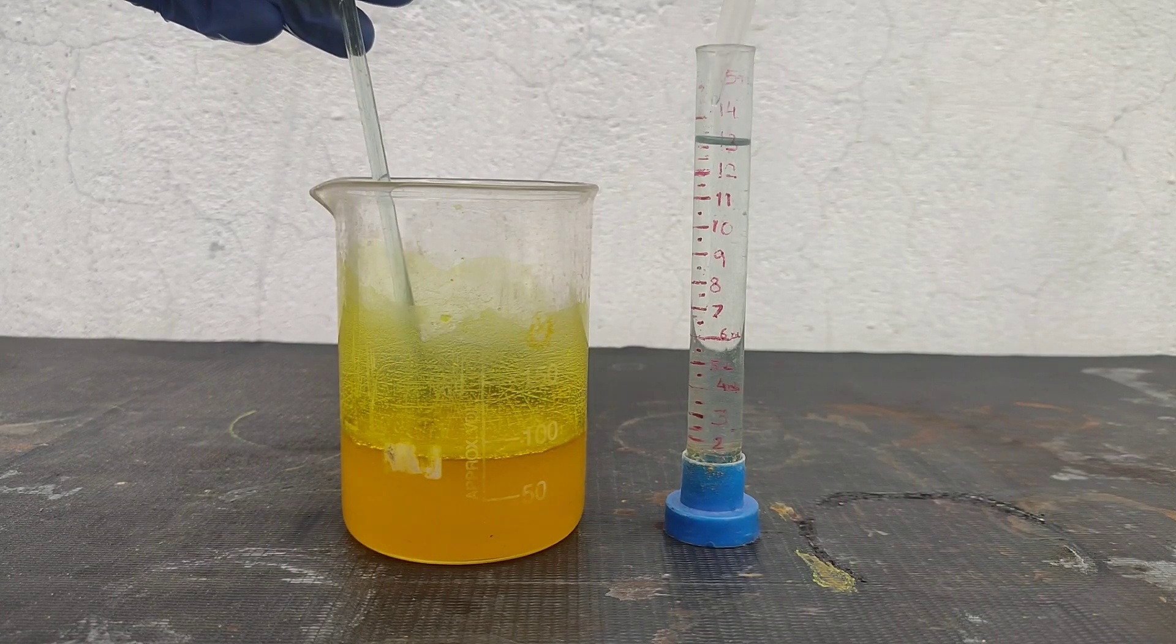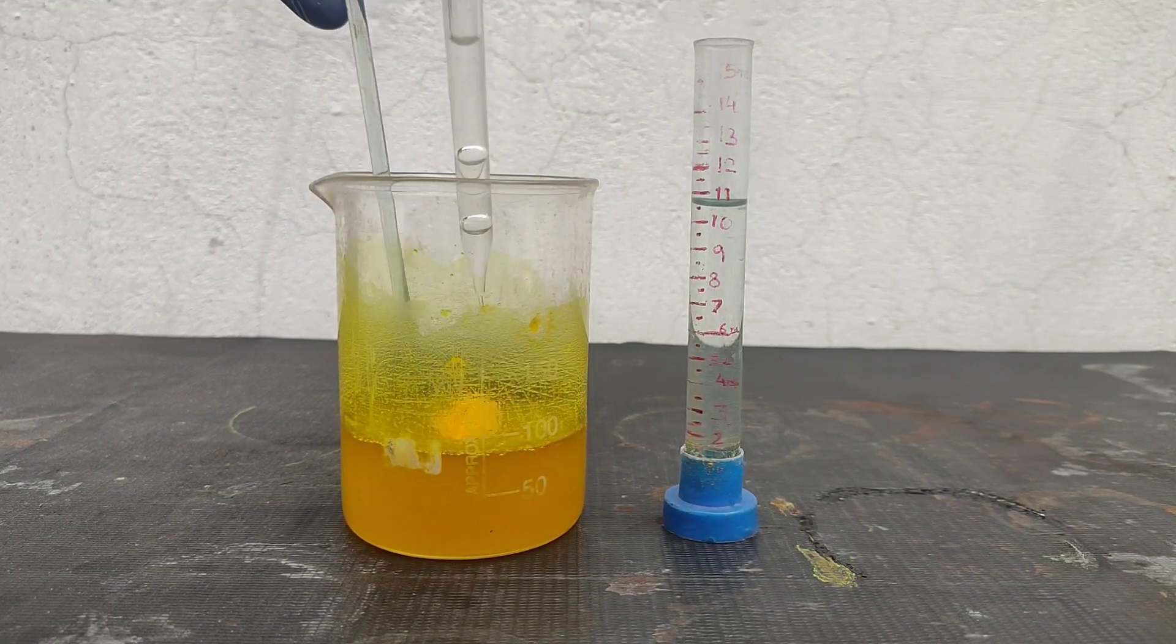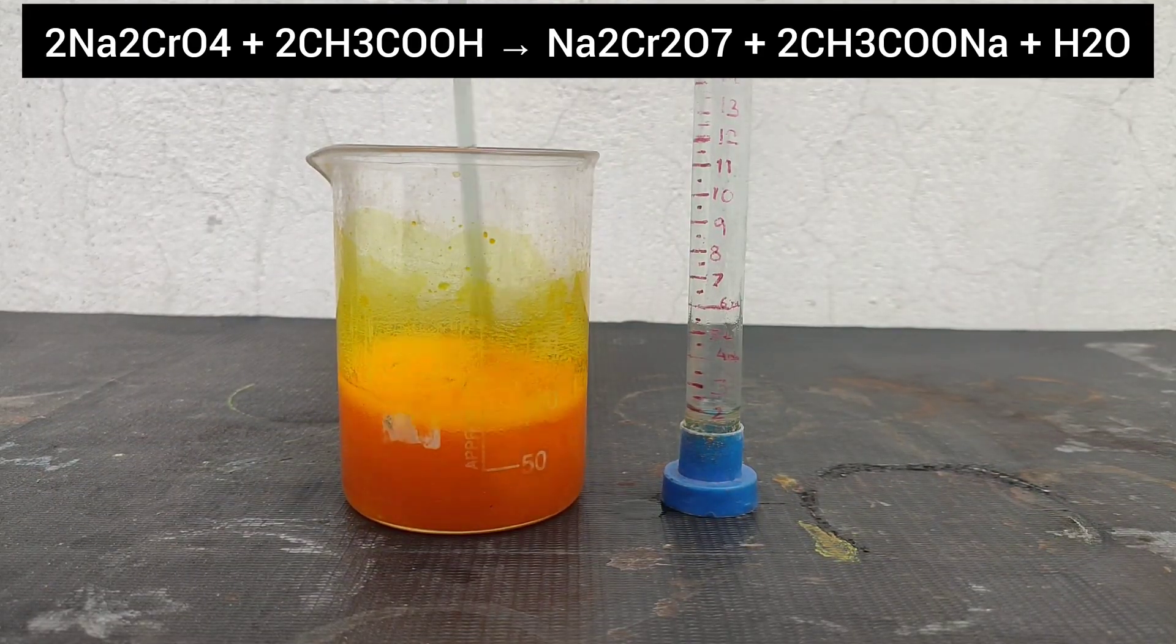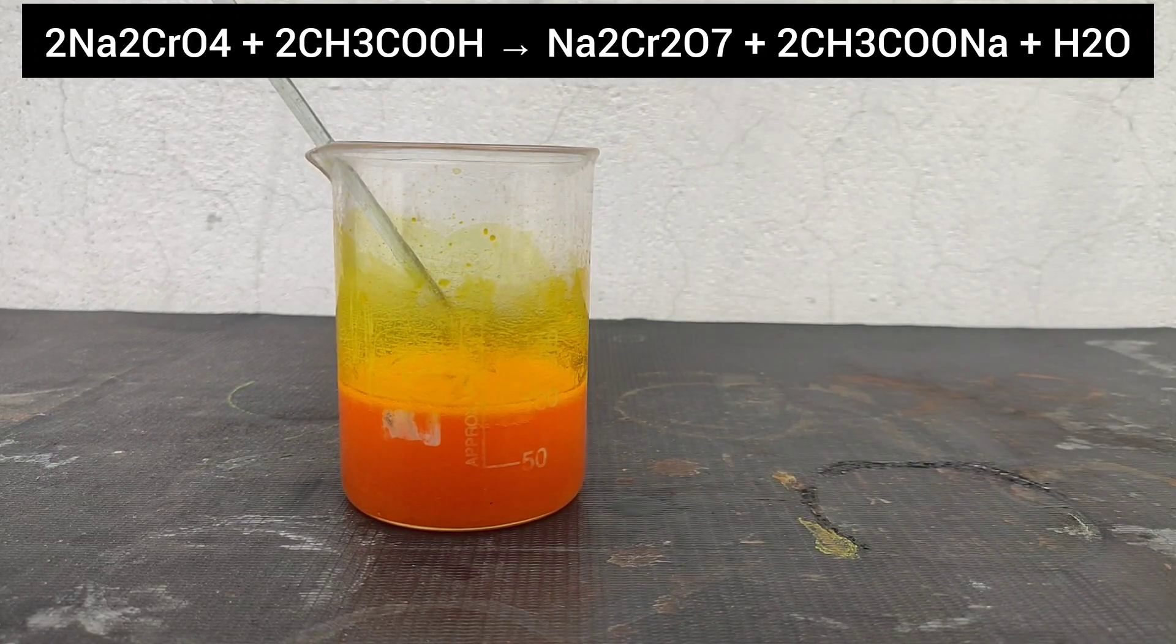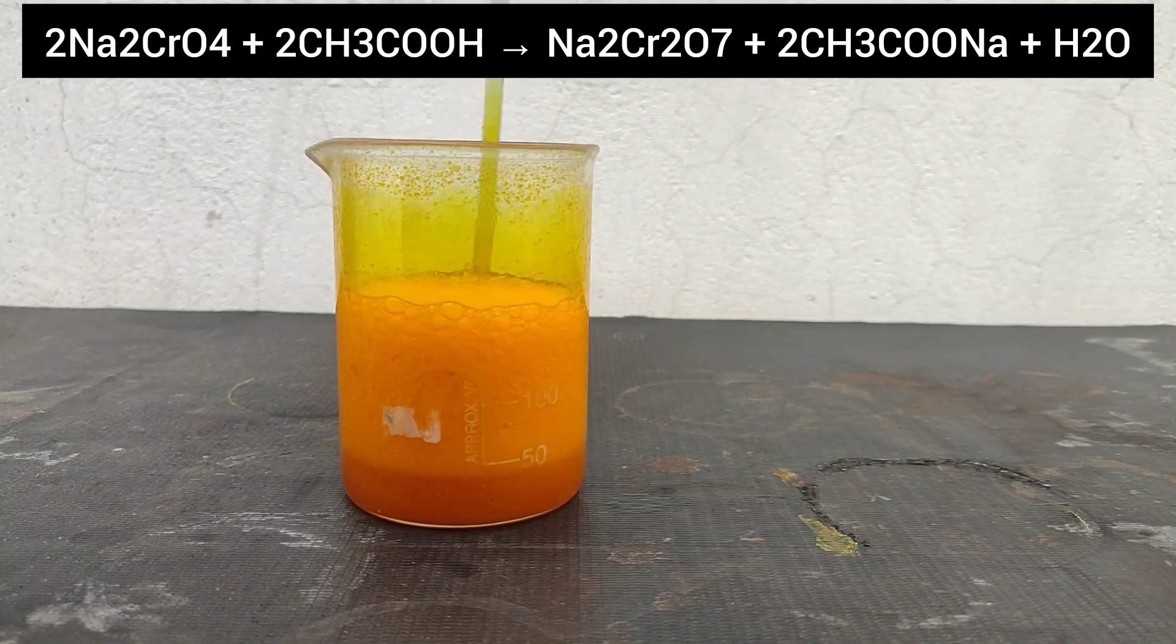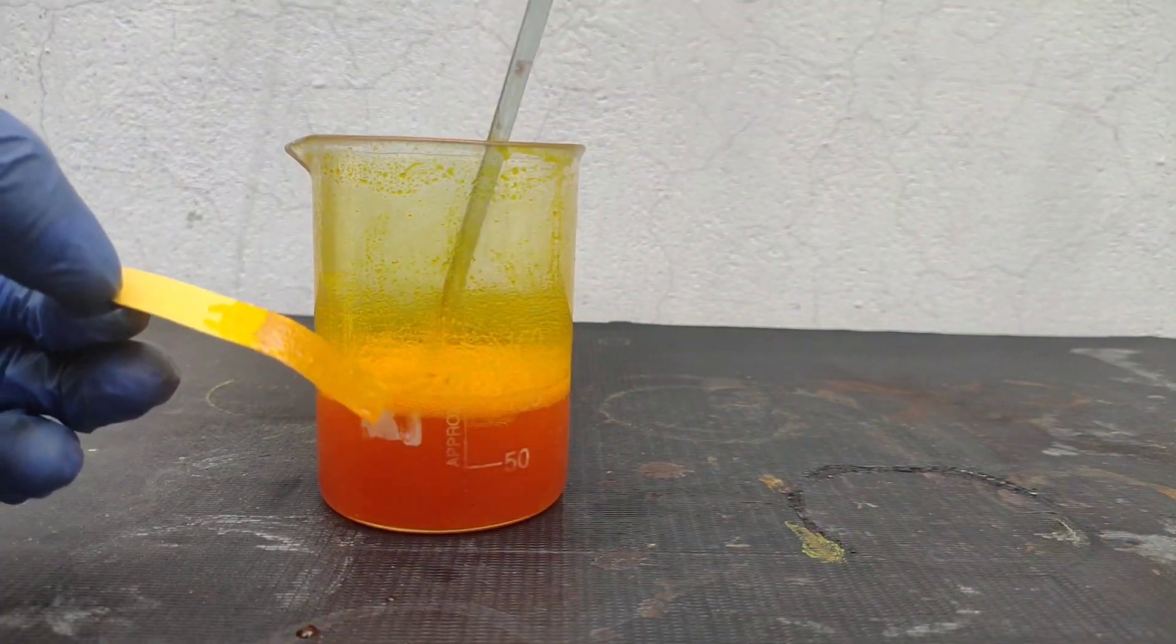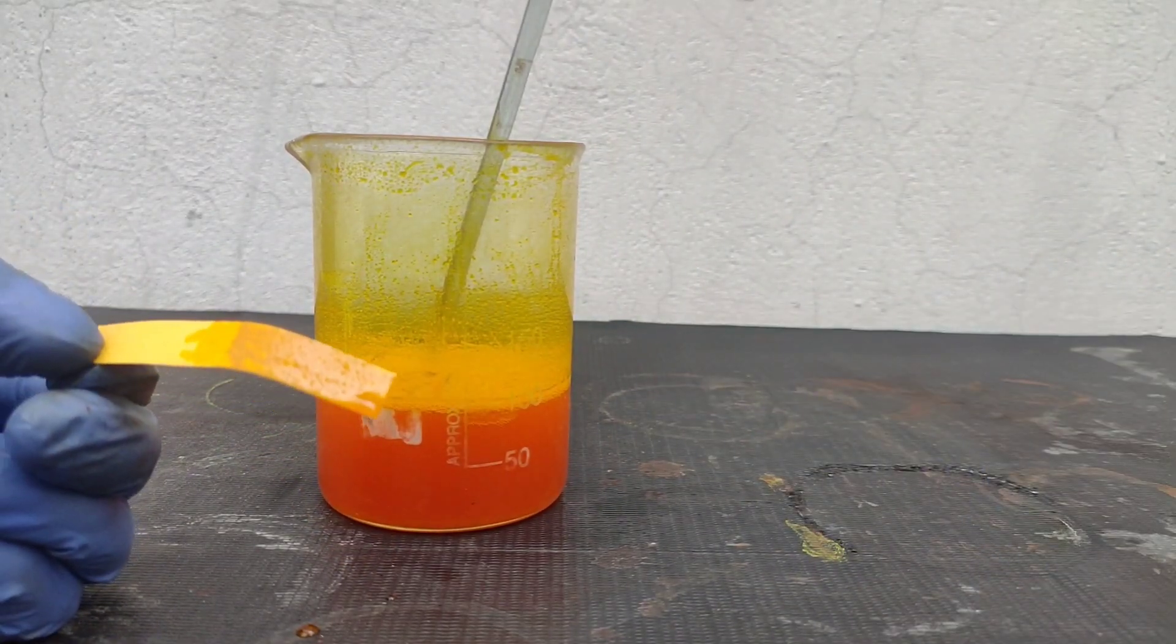I added the acetic acid slowly. First it reacted with unreacted sodium carbonate to give carbon dioxide, and then on further acidification the solution turned orange. I added 1 ml acetic acid in excess and checked the pH. It was around 5 to 6, which is due to the buffer formed by acetic acid and sodium acetate produced in situ. Even on adding excess acid, pH didn't go lower.